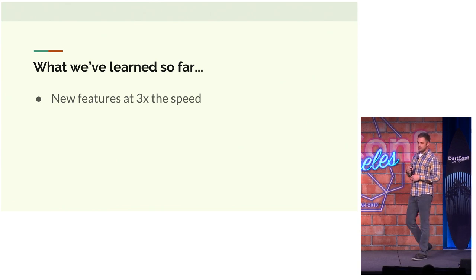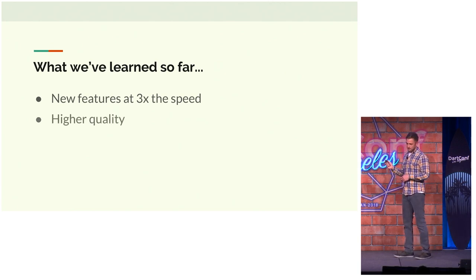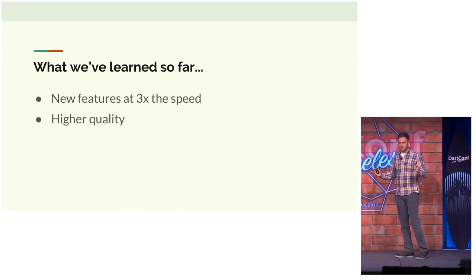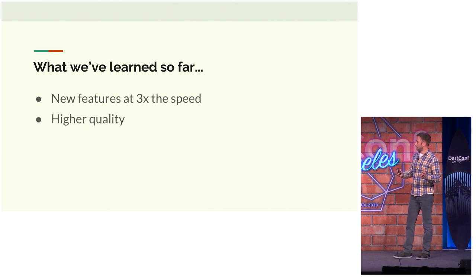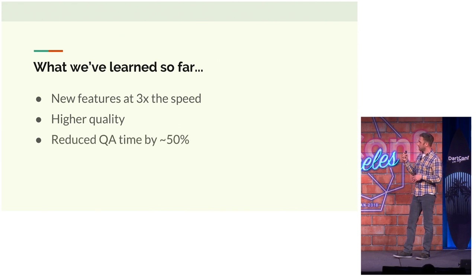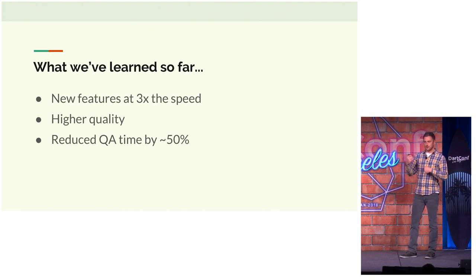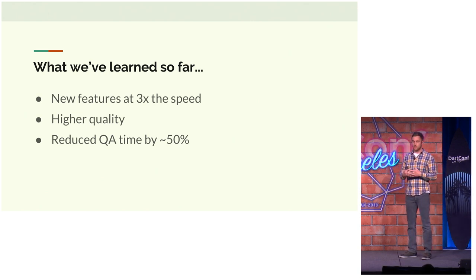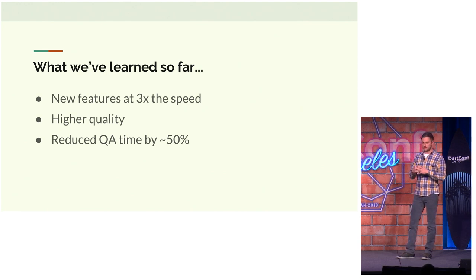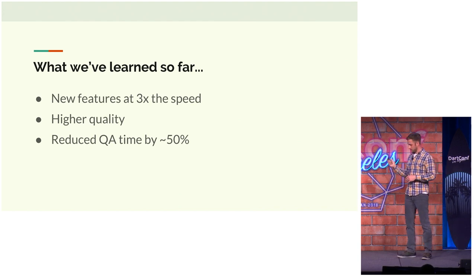We are developing features at three times the speed we were before, for obvious reasons — we're not writing it three times, and this is a real number. Our features are of higher quality because we are testing better, we're all reviewing each other's code, and we're all thinking about the problem in the same way. We've also reduced our QA time significantly. When that logic is all contained in the controller, we can communicate to our QA people that a fix was made at the controller layer, and there's a good possibility it's fixed across all platforms.